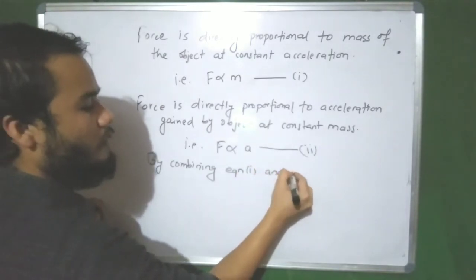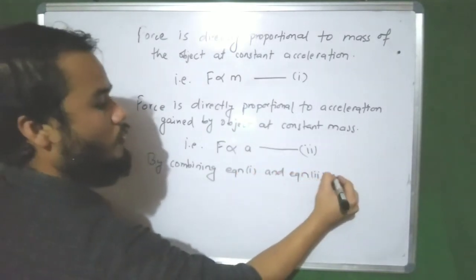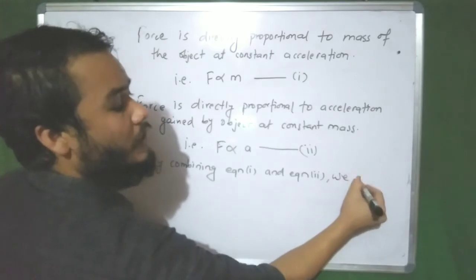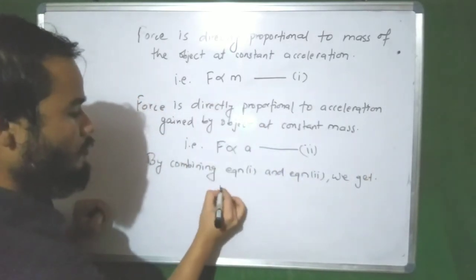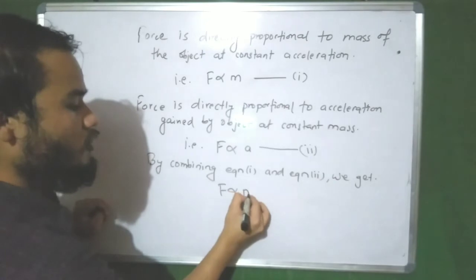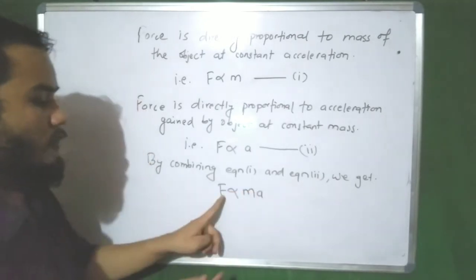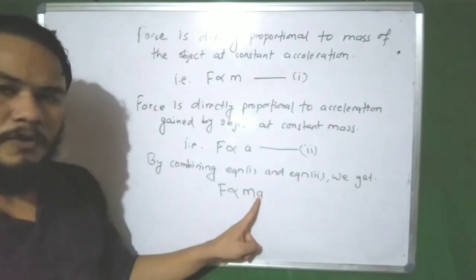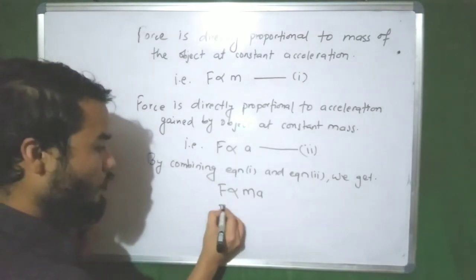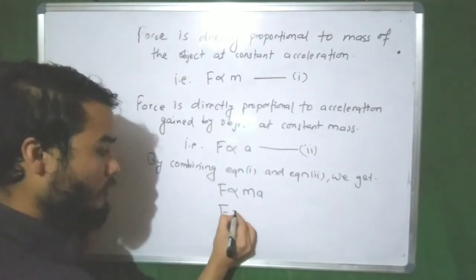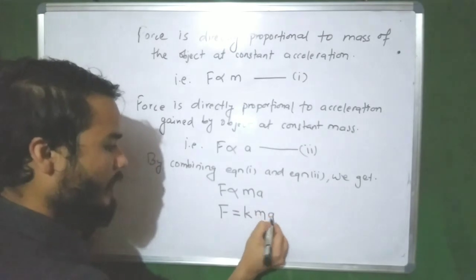By combining equation one and equation two, we get: force is directly proportional to ma. Therefore we can write force is equal to k times ma, where k is a proportionality constant.